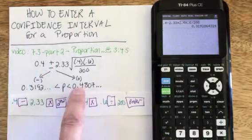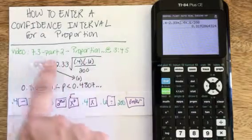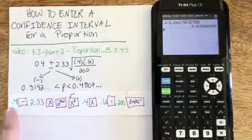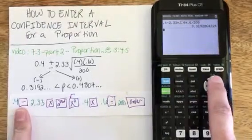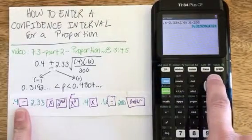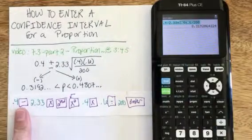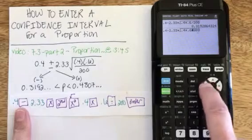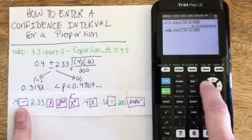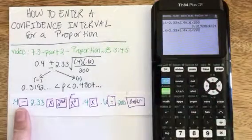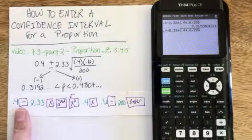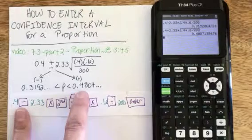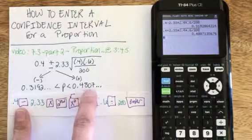To get the upper bound value, I don't need to type the whole thing in again where I change the subtraction operator to a plus operator. Instead what I can do on this calculator is hit up arrow once and twice and now I've highlighted the line I want to edit, but I do need to hit enter to make that a live equation where I can go back to the subtraction sign and when that is highlighted I can hit the plus button on the calculator and enter again to get my upper bound value of 0.480.